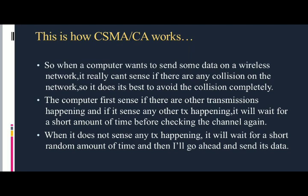Let's see the working of CSMA CA. When a computer wants to send data on a wireless network, it cannot sense if there are any collisions, so it does its best to avoid collision completely. The computer first senses if there are other transmissions happening. If it detects any transmission, it will wait for a short amount of time before checking the channel again. When it does not sense any transmission, it will wait for a short random amount of time and then go ahead and send its data.